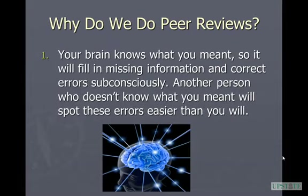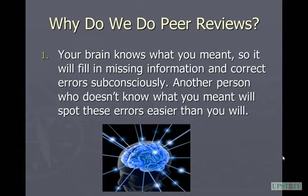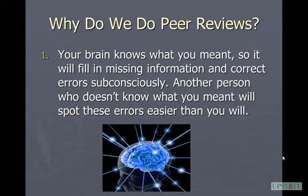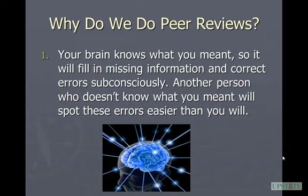Now let's talk about why we do it, because some people think it's pointless and they don't want to do it, and that makes them very bad partners. So why do we do peer review? One of the reasons is your brain knows what you meant. So when you read over your own paper, if there's an error, your brain is going to make those connections and you might have an error and not even notice, because your brain knows what you meant. This is some biology, psychology, neurology stuff going on here. There are things your brain is not going to be as good at catching as someone else's, just because you're familiar with your own work. Something you could read a hundred times and miss, someone else might see on the very first read. This is a biological fact.